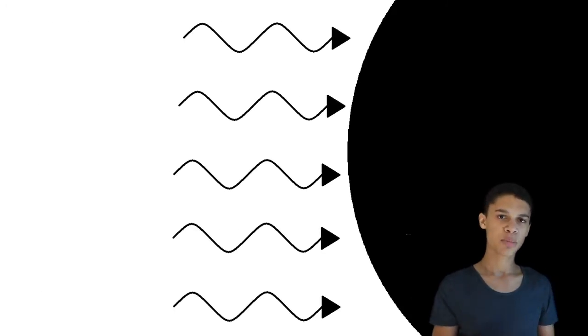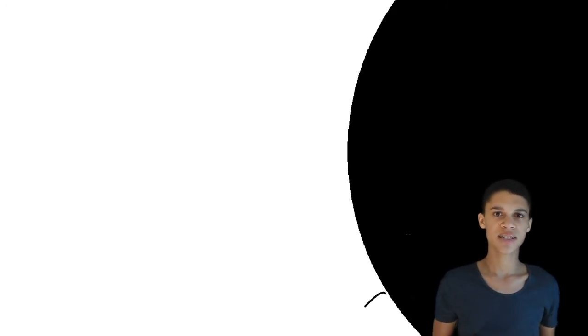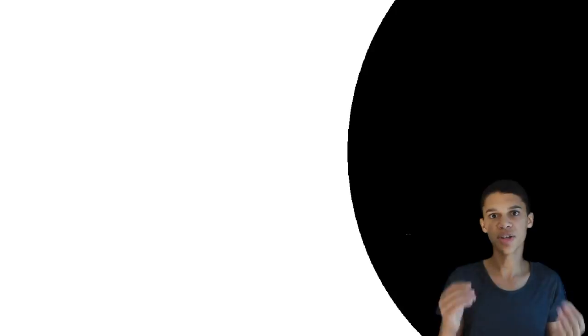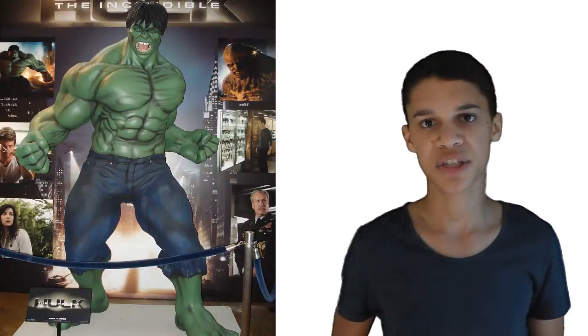A black body is an idealized body that can be a solid, a liquid, or a gas. By idealized, I mean that it was invented for science purposes and that it does not exist in nature. What is special about this black body is that it absorbs all the electromagnetic radiations and energy that it receives, may it be yellow light or gamma radiation.